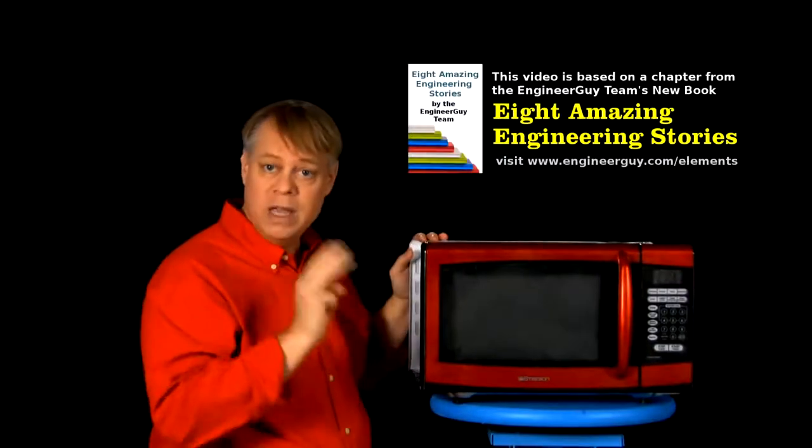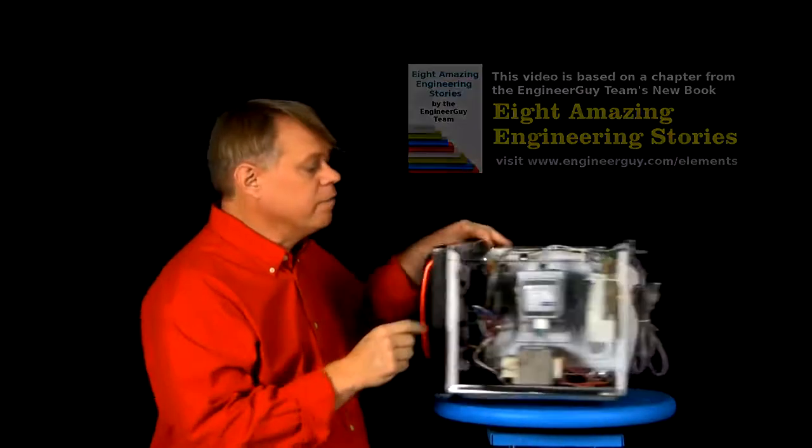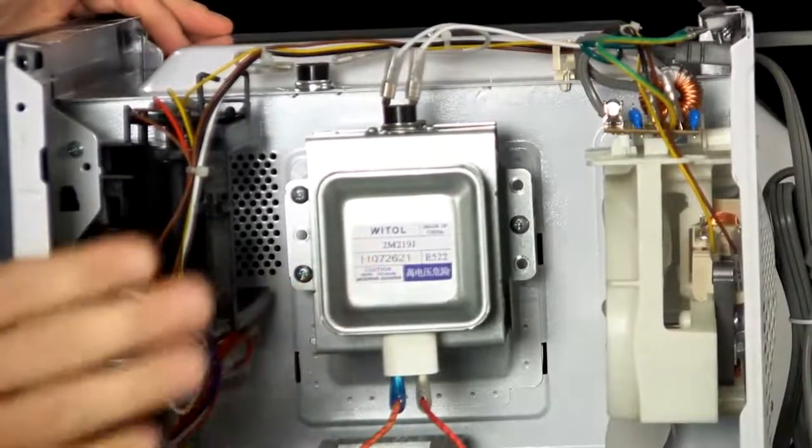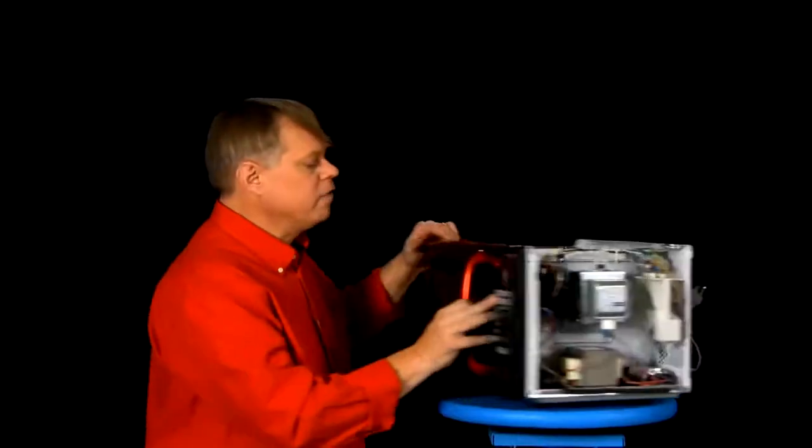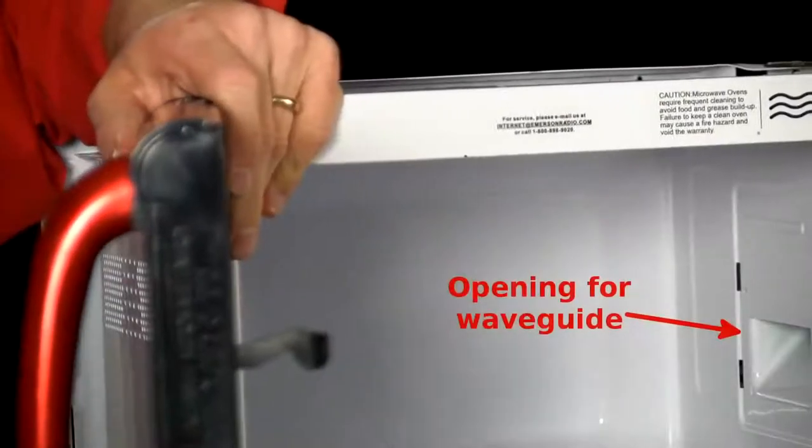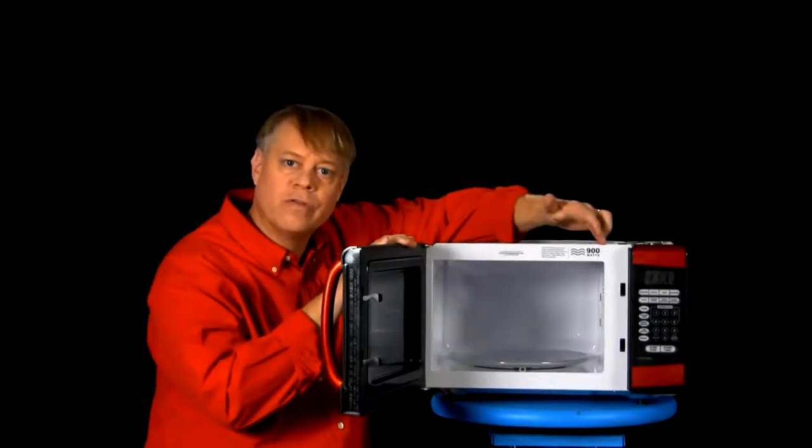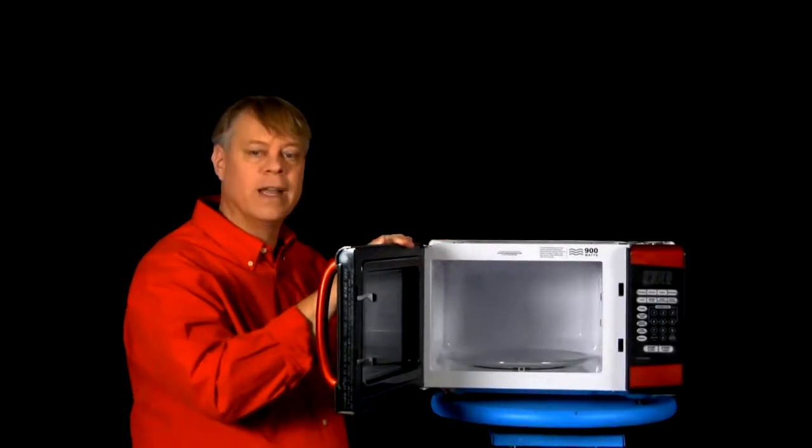A microwave contains three main components: a vacuum tube called a magnetron that generates the energy that heats food, a wave guide hidden in the wall to direct that energy to the food, and a chamber to hold the food and safely contain the microwave radiation.